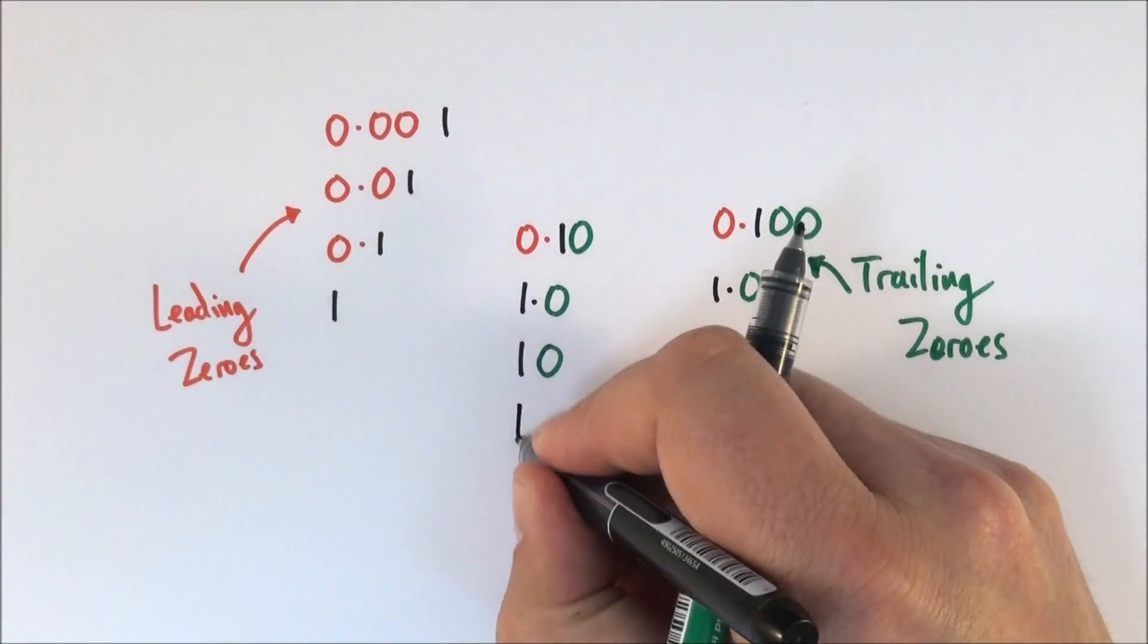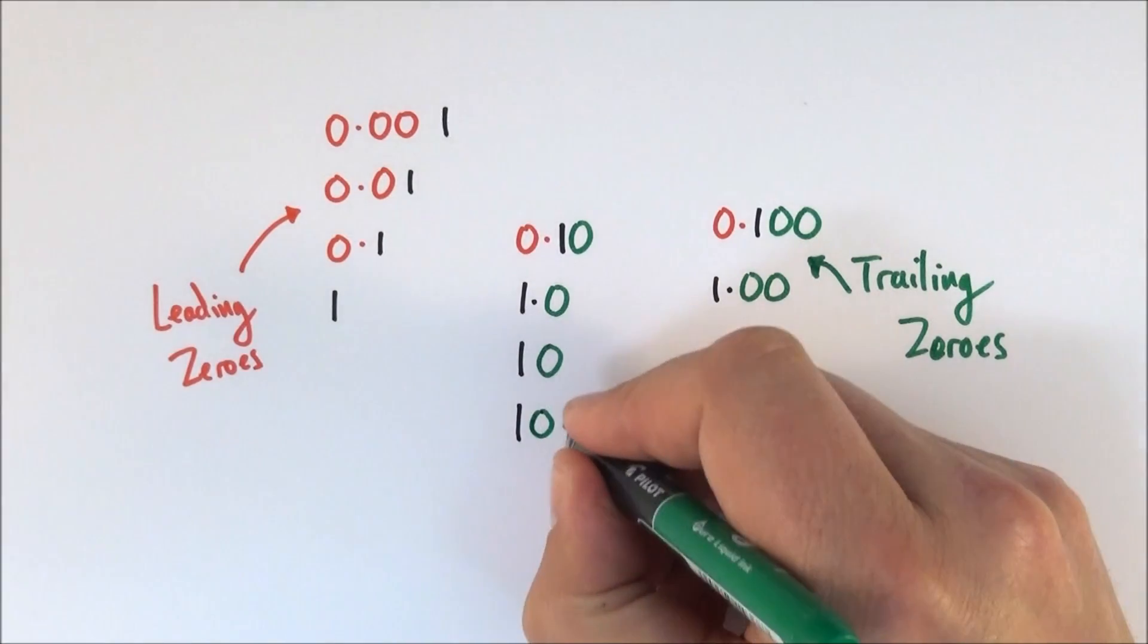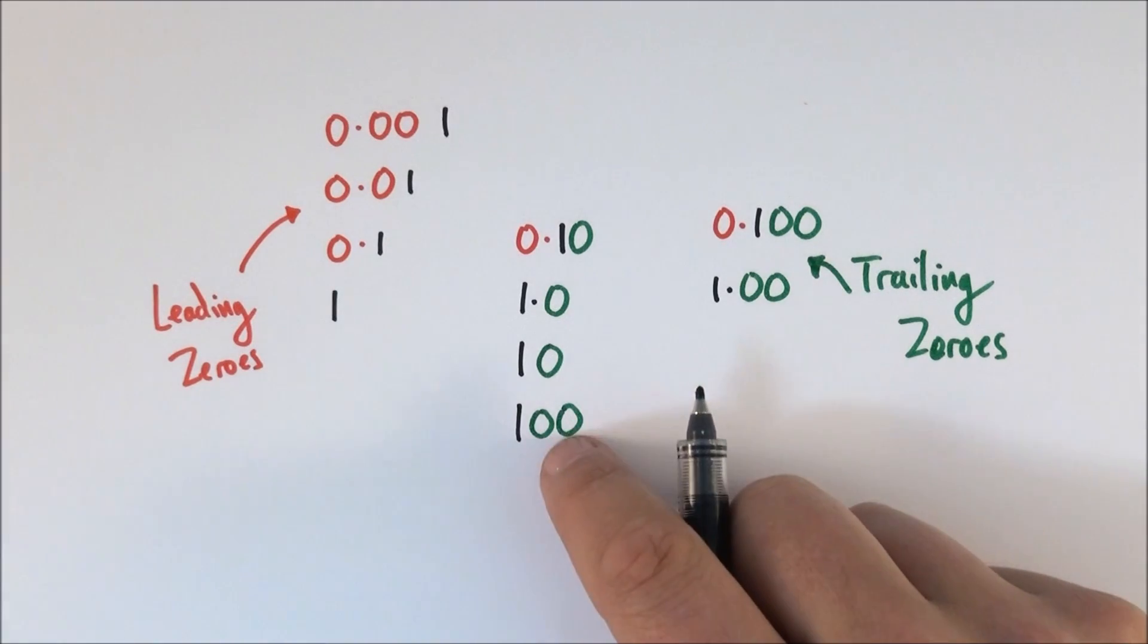Equally if we have the number 100 then just by writing the number 100 that automatically makes this three significant figures.